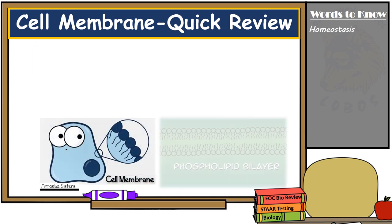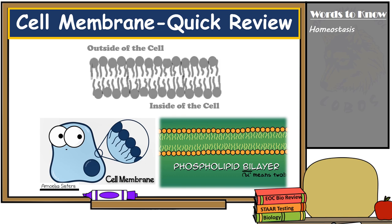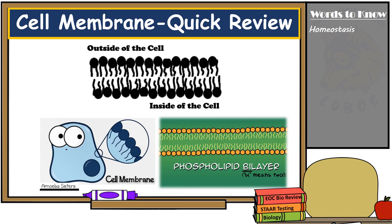The cell membrane has two phospholipid layers, thus the name phospholipid bilayer — 'bi' meaning two layers. Remember that phospholipids have a hydrophilic polar head and a hydrophobic nonpolar tail, which helps in its selectivity.